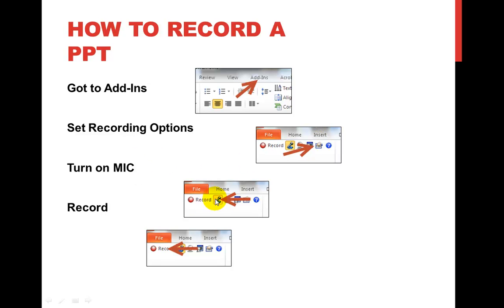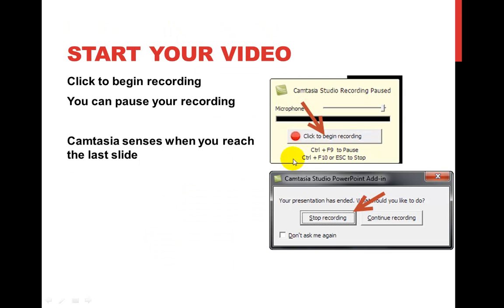Turn on the mic. If it is not orange, it's not on. Then hit the record button — this will start up the process. It will actually start the PowerPoint in show view, just like we have here, and start Camtasia running so you can record. Make sure you click the record button. You can pause it using Control+9 and then start up again with Control+9.